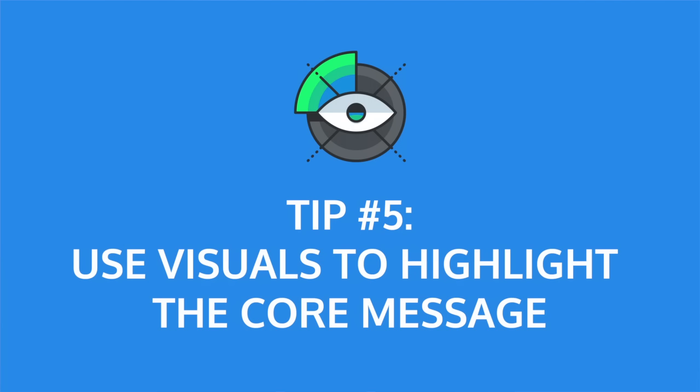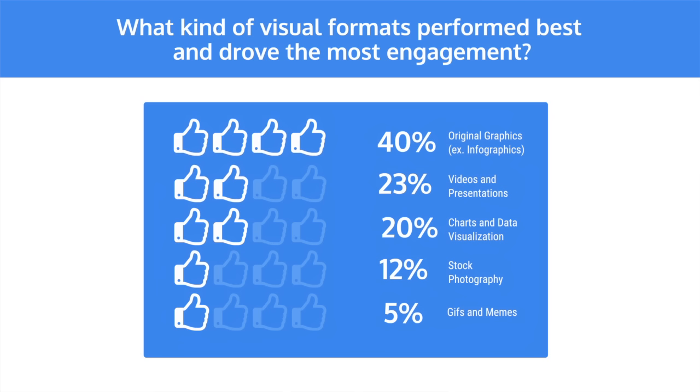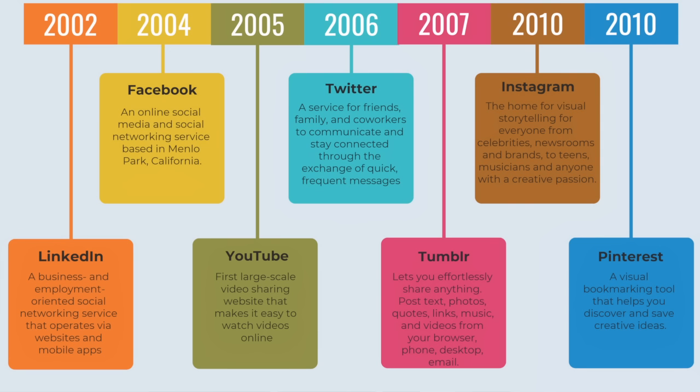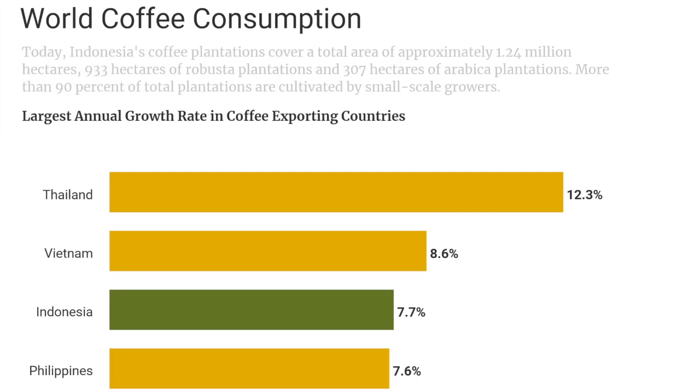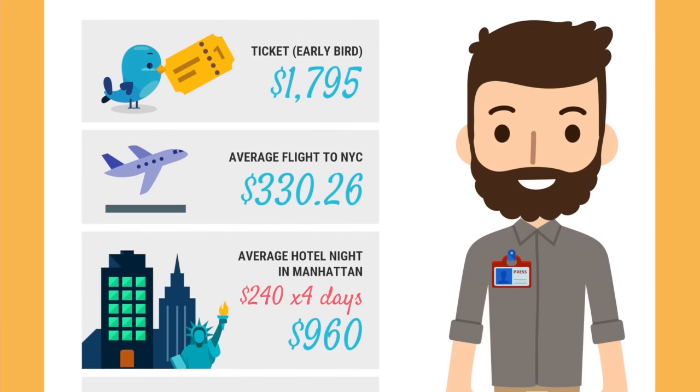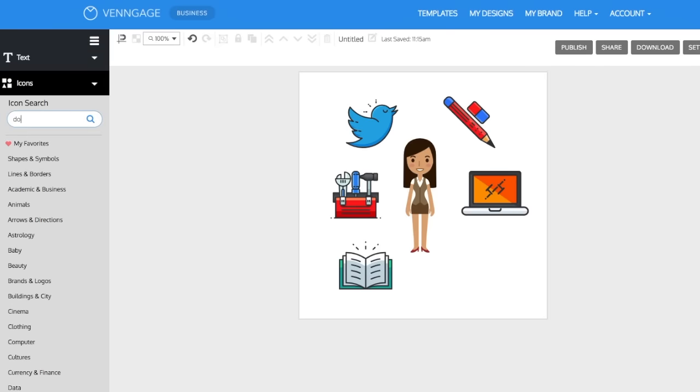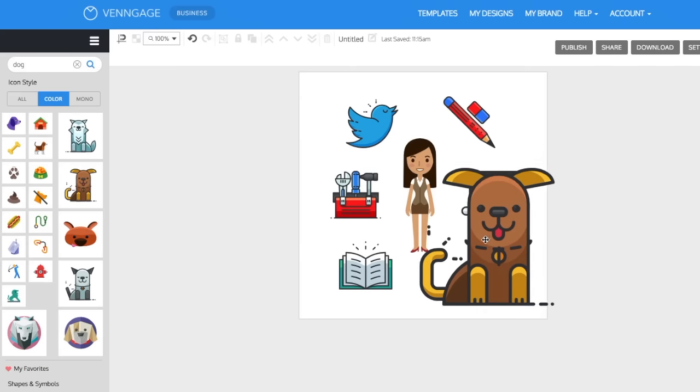Tip number five: use visuals to highlight the core message of each slide. Visuals are a great way to eliminate extra text and make information more engaging and easier to understand. We surveyed over 300 digital marketers asking what visual format they found most engaging, and the overwhelming winner was original graphics like infographics — I'll link to the full study below. Types of visuals you can include are timelines, flowcharts, bar graphs, pie charts, data visualizations like infographics, and mind maps. You can also use icons to represent simple concepts — at Venngage, we've got over 40,000 icons you can use.